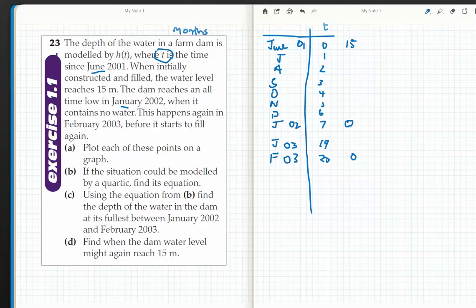Part one: plot these on a graph. Okay, so I'll go to my graph. I've got H of T is 15 at zero. And at 7, we're there at zero. And at 20, we're also there at zero.